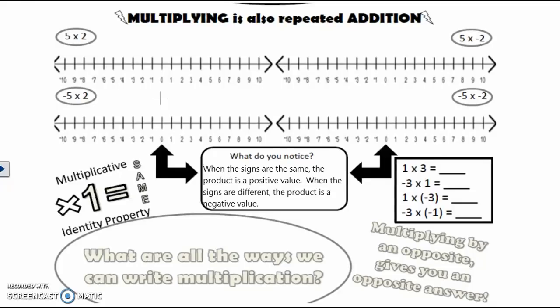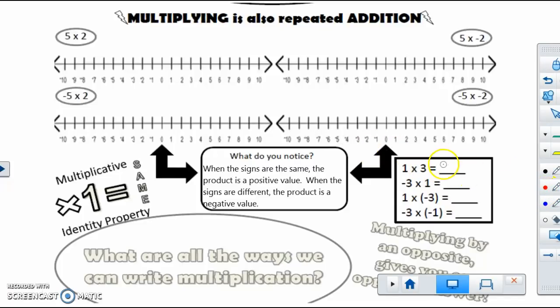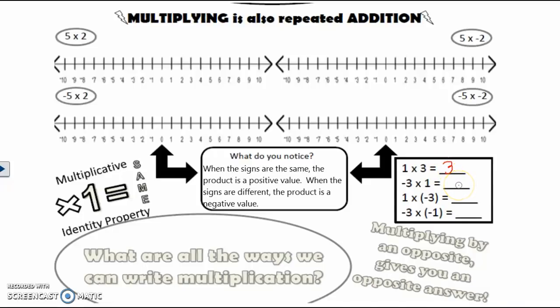The multiplicative identity property means when I multiply by positive one, I always get the same value. So one times three is three, and negative three times one is negative three. One times negative three is also negative three — whatever you multiply by one gives you the same value. But negative three times negative one is something different: since both values are negative they cancel out, so negative three times negative one is positive three.